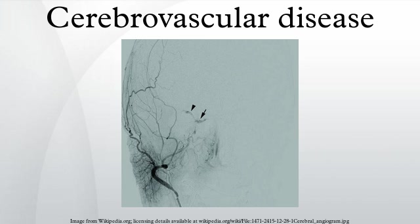A rise in blood pressure can cause tearing of vessels leading to intracranial hemorrhage. A stroke usually presents with an abrupt onset of a neurologic deficit, attributable to a focal vascular lesion. The neurologic symptoms manifest within seconds because neurons lack glycogen, so energy failure is rapid.